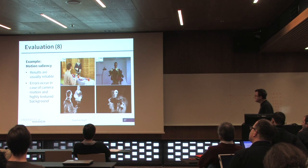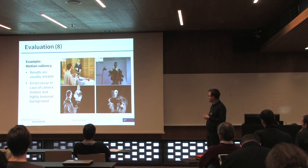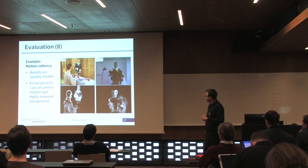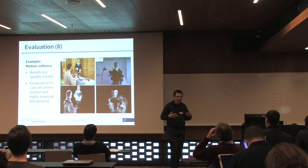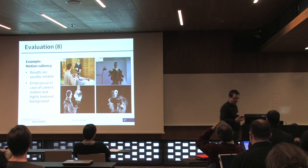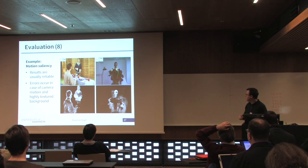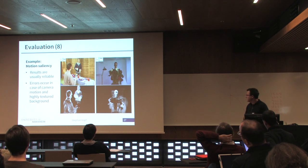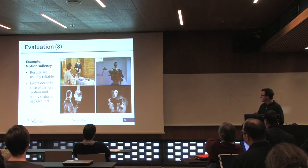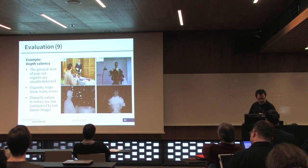In the case of motion saliency, we usually also get good results — they are usually reliable. For example, in this case, the flower is static so we do not get any motion information about it, and perhaps also the lamp on the right is not captured, but usually people or objects that move are captured. That is also the most critical part.